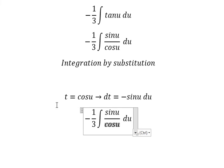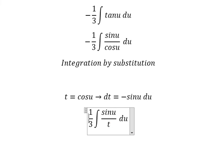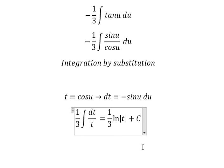So cos u we change by t, negative sin u du we change by dt. The integration of this one, we have one over three ln of the absolute value of t, and I will put about c.